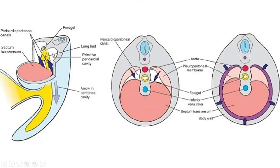Normally the thoracic cavity is connected with the abdominal cavity via the pericardioperitoneal canal, indicated by the blue arrow-marked area. In the upper portion we have the thoracic cavity where the lungs develop, and between the lungs we have the heart. We have the pericardioperitoneal cavity and the pleural cavity above, and the peritoneal cavity — the abdomen — below. This connecting canal is the pericardioperitoneal canal.